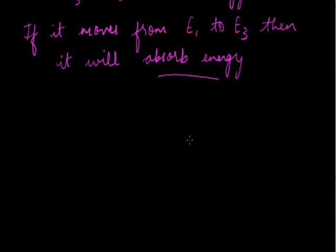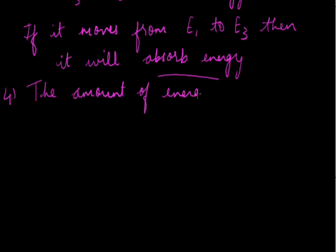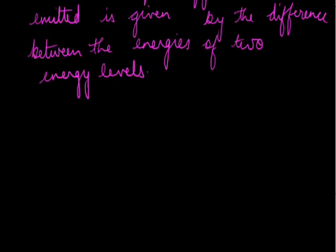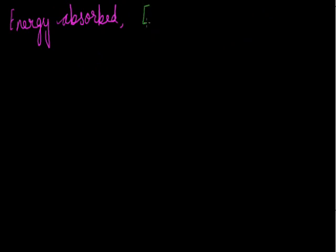Now the next thing what he told was about the amount of energy emitted or absorbed. He said that the amount of energy absorbed or emitted is given by the difference between the two energy levels. So how he represented this, that is when electron moves from energy level E2 to E3, then it is given as energy absorbed is the amount of energy, that is E3 minus E2, that is represented by delta E.